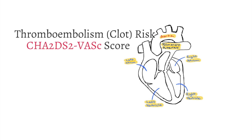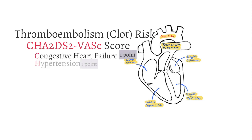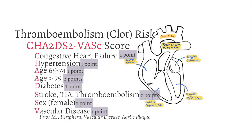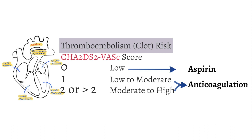Understanding each person's risk of clot formation allows us to identify those who need anticoagulation to prevent stroke. We use the CHA₂DS₂-VASc score to decide on anticoagulation. The score assigns 1 point for congestive heart failure, 1 point for hypertension, 1 point for age 65–74, 2 points for age ≥75, 1 point for diabetes, 2 points for prior stroke, TIA, or thromboembolism, 1 point for vascular disease, and 1 point for female gender. A score of 0 is low risk; a score of 1 is low-to-moderate risk and should prompt consideration of antiplatelet versus anticoagulation therapy; a score of 2 or greater is moderate-to-high risk and these patients should be anticoagulated. One must also consider the bleeding risk of these medications.